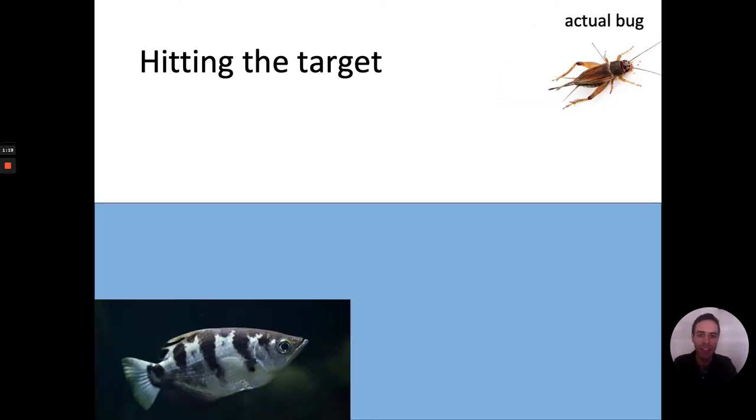But with the fish it's different because the fish is underwater and the bug is not underwater, so there's gonna be refraction that happens. The light from the bug is going to refract. It bends when it enters the water and it bends towards the normal because water is denser than air and light travels slower in water than it does in air.